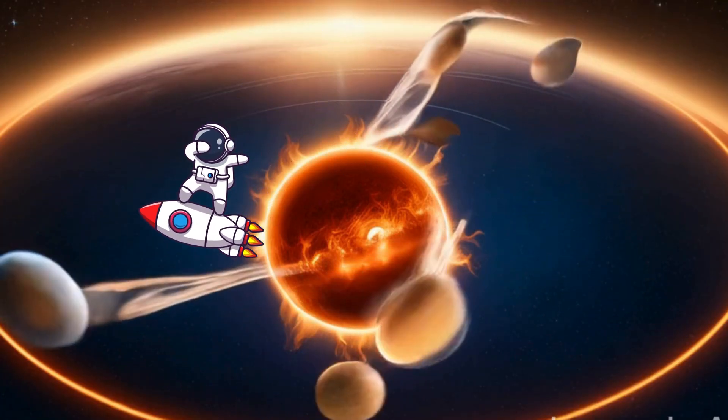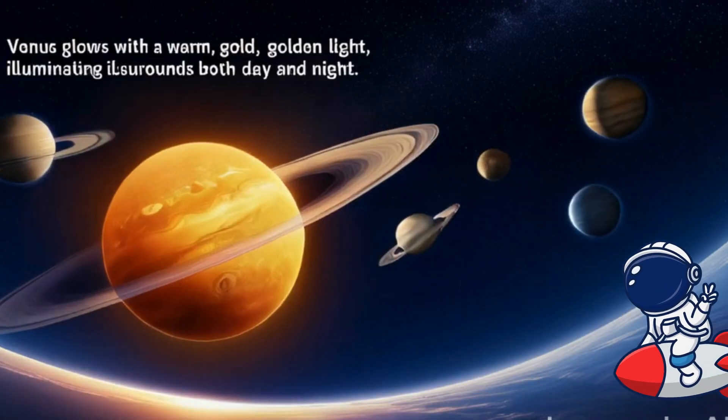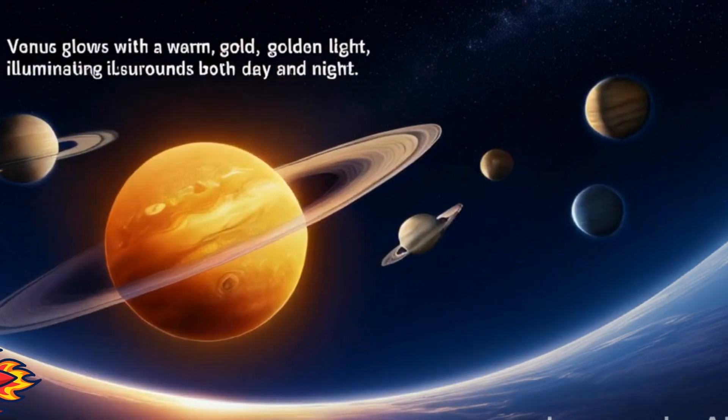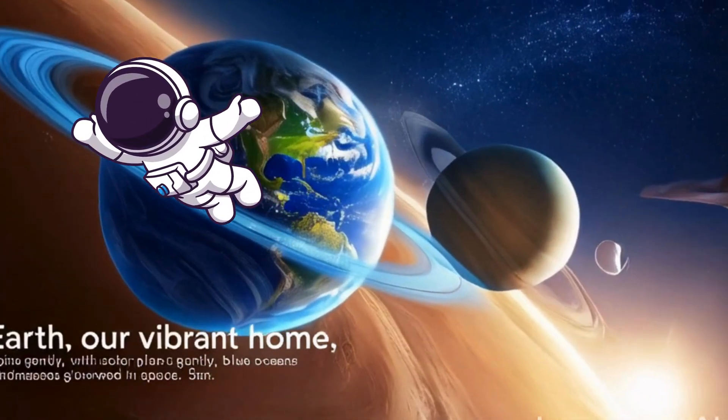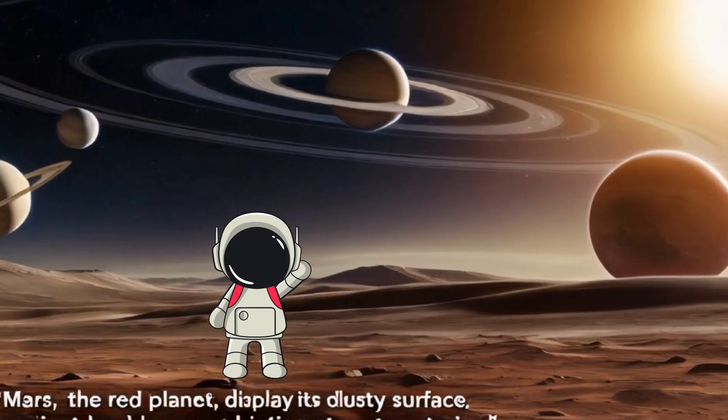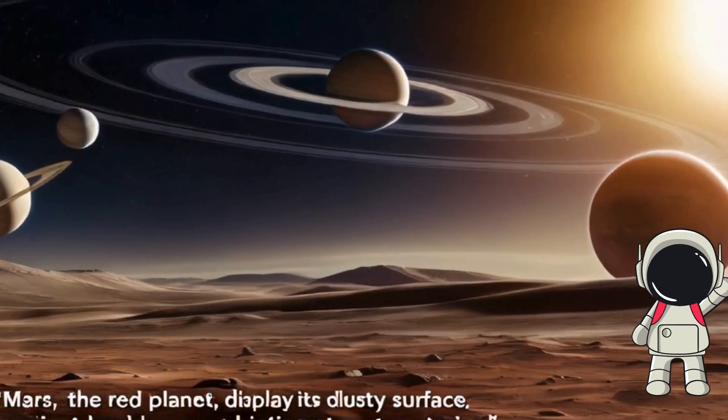Mercury's quick near the sun, speeding past its number one. Venus glows with golden light, shining bright both day and night. Earth our home spins day and night with oceans blue and land so bright. Mars is red with dusty plains, dreaming of its ancient reigns.